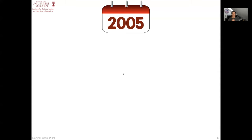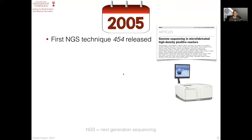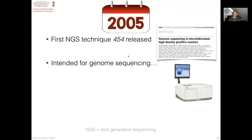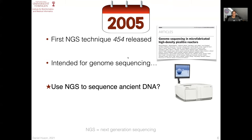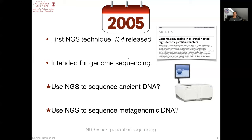Let's go back to the year 2005. You may recall that in 2005, the first second-generation or next-generation sequencing technology was introduced — the 454 sequencer. This sequencer was originally intended for genome sequencing, but the question was: what else can we apply it to? For example, can we use next-generation sequencing for ancient DNA or metagenomic DNA?